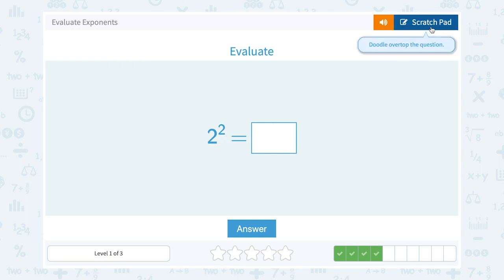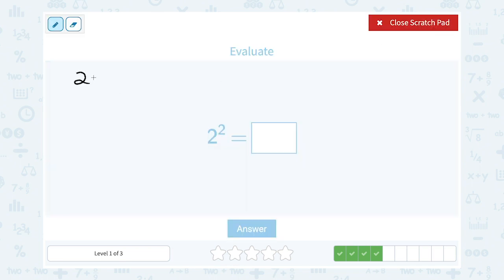Two to the second power. This is telling me to multiply two out two times. So two times two gives me four.